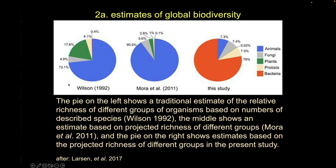Studies have changed over time. A pie chart from the early 1990s shows that roughly three-quarters of diversity is in the animal kingdom. The Mora paper shows the same pattern. But now people applying molecular techniques and the evolutionary species concept find that animals are actually a small chunk of total estimated diversity — it's microbial life that really drives most of the numbers.